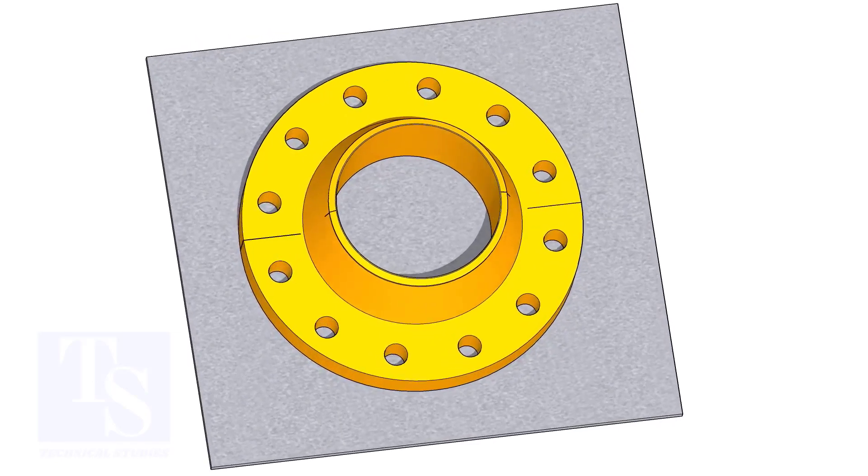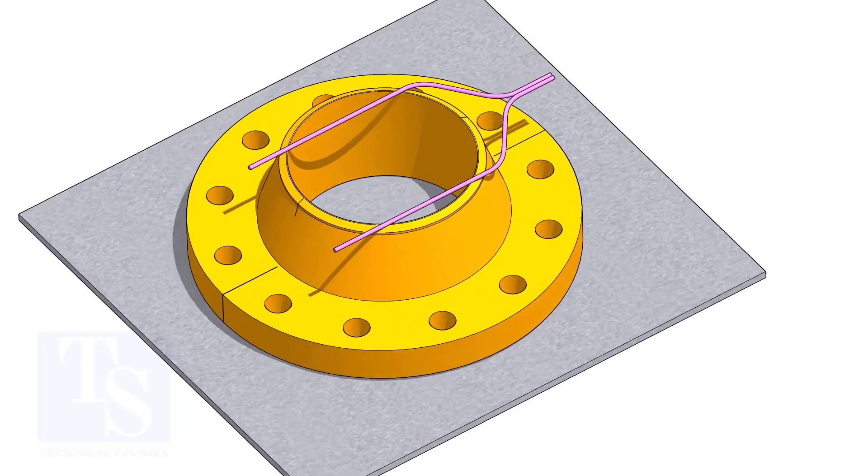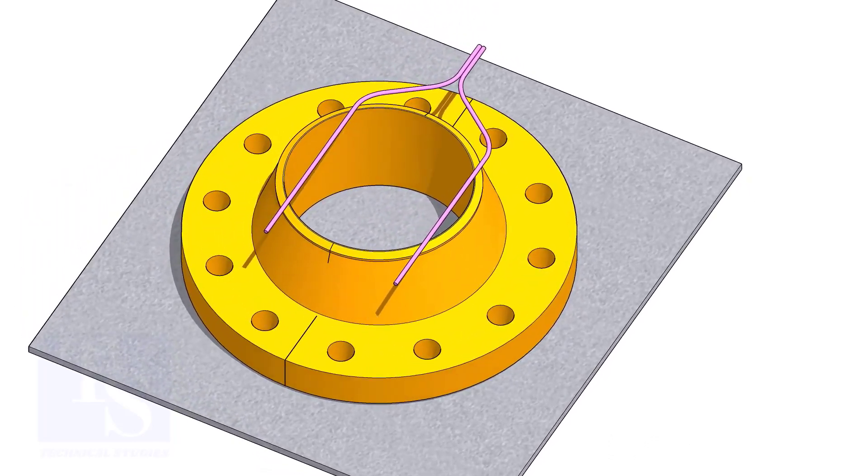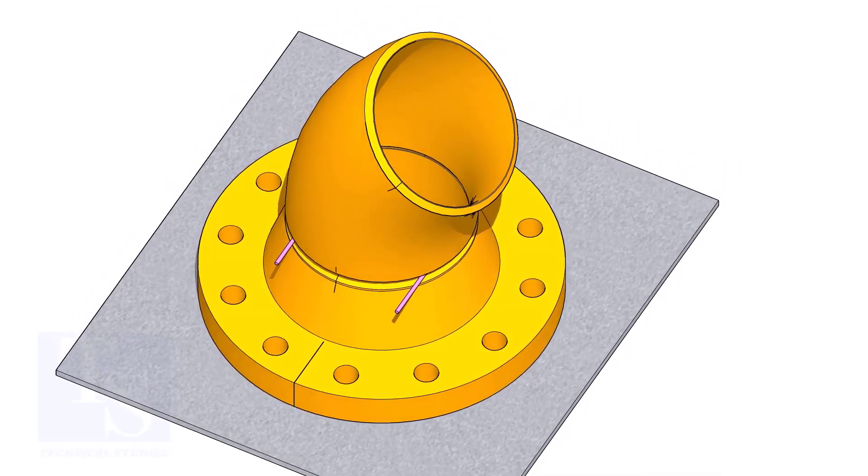Put the flange on a straight plate. Put the gap rod and the elbow on it. Match the center lines of the elbow and the flange.